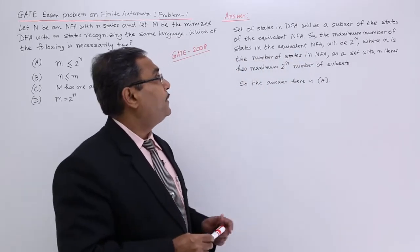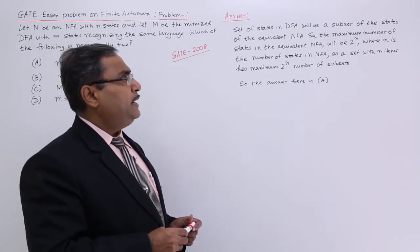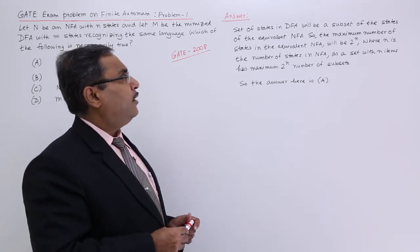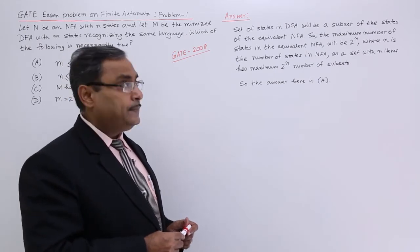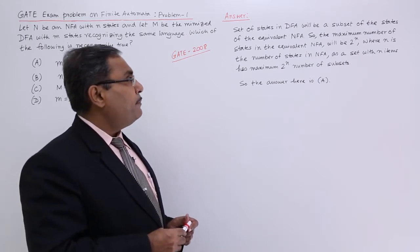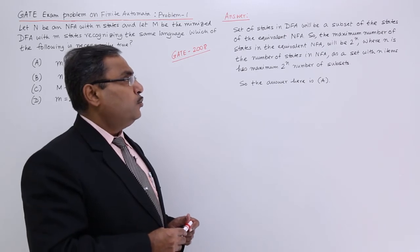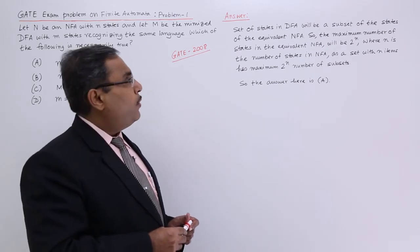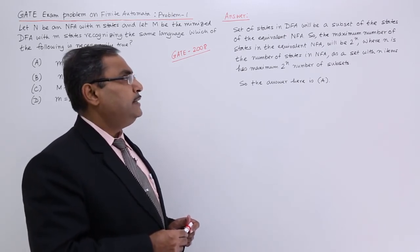Now, here is the answer. Set of states in DFA will be a subset of the states of the equivalent NFA. The maximum number of states in the equivalent DFA will be 2 to the power of n, where n is the number of states in the NFA.